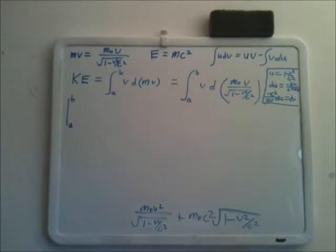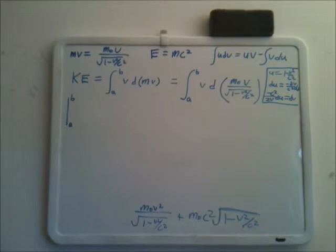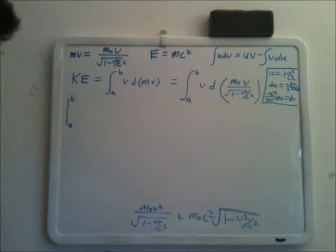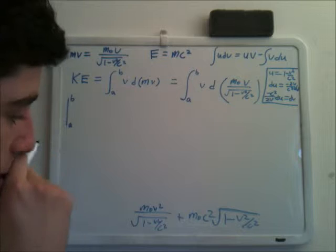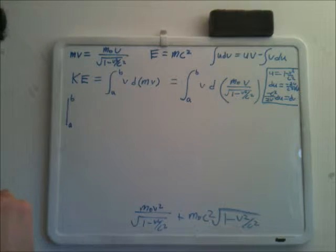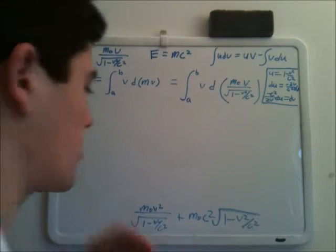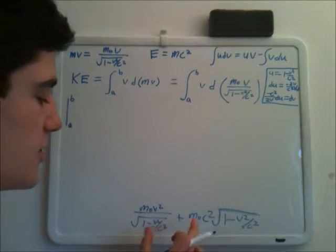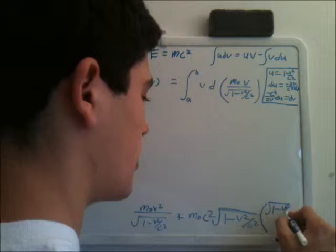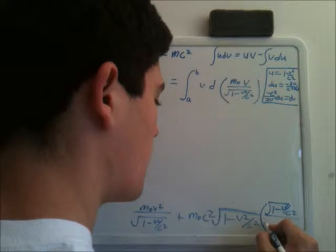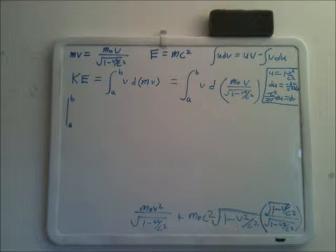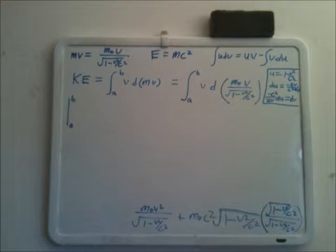Let's see where we are. This expression is still from a to b. What we're going to do with this equation is set common denominators so that we can add the terms together. We're going to multiply m₀c squared times the square root of 1 minus v squared over c squared, over the square root of 1 minus v squared over c squared — multiplying by 1 — to get equal denominators for both terms.